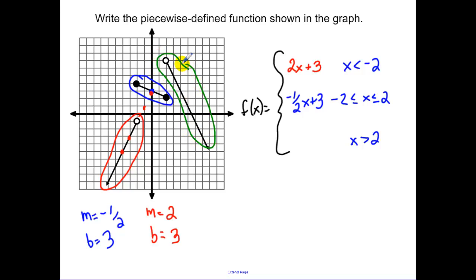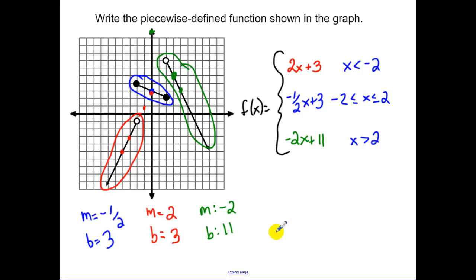For the last right-side function, pick two points: down 2, right 1 gives a negative slope of negative 2. Counting out from the endpoint, extending the line upward, the y-intercept lands at positive 11. So that equation is y equals negative 2x plus 11, completing the piecewise function.